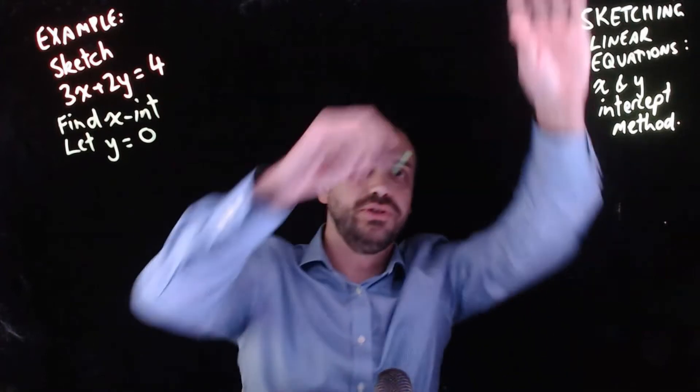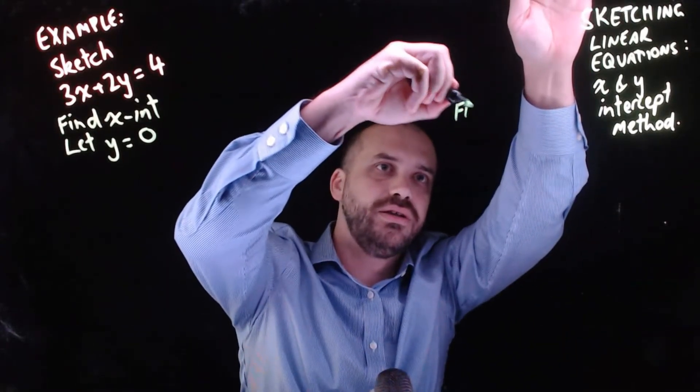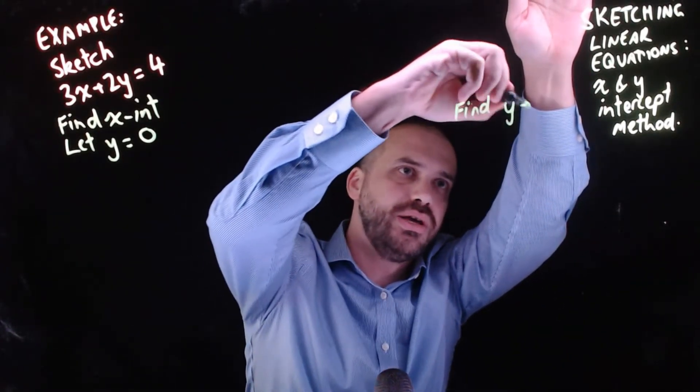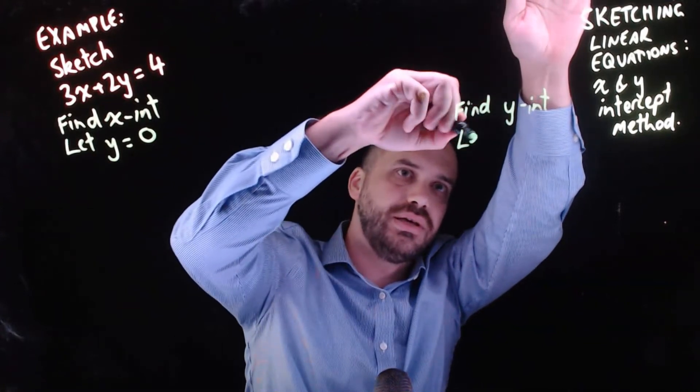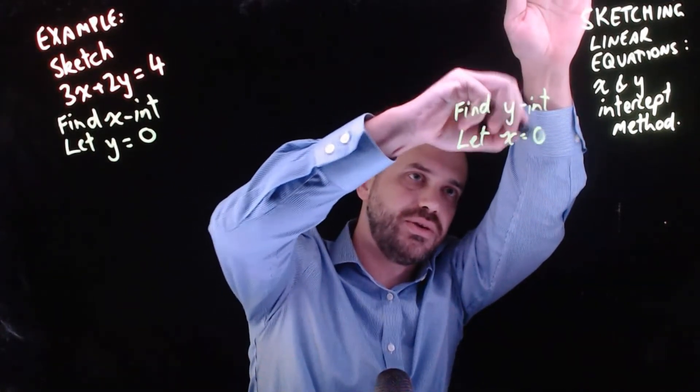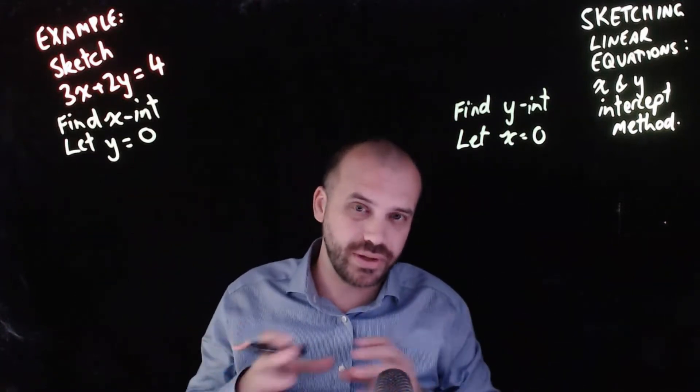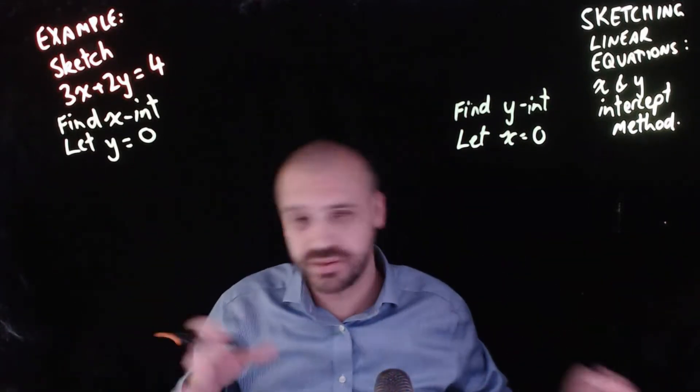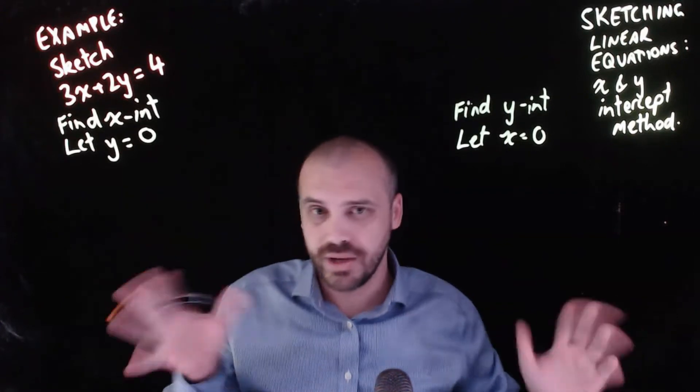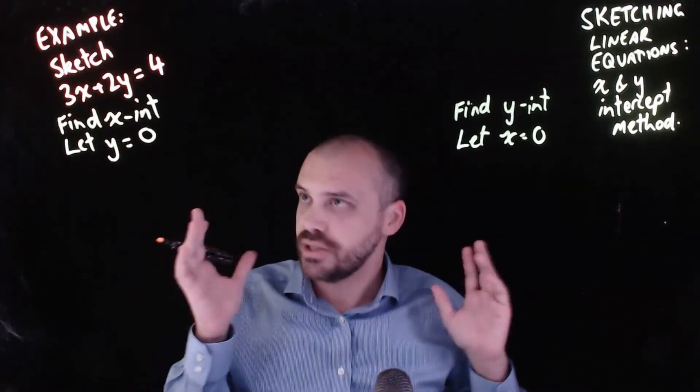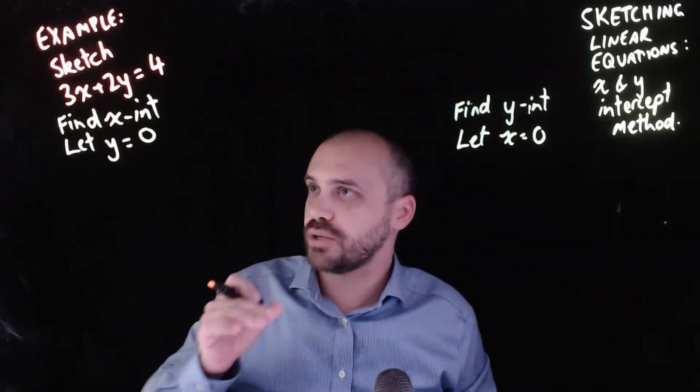The other phrase you need to learn is: find the y intercept, let x equal zero. These two sentences are really important and they'll help you sketch most lines. There are some lines where these aren't very useful, but we'll come to that in another video.